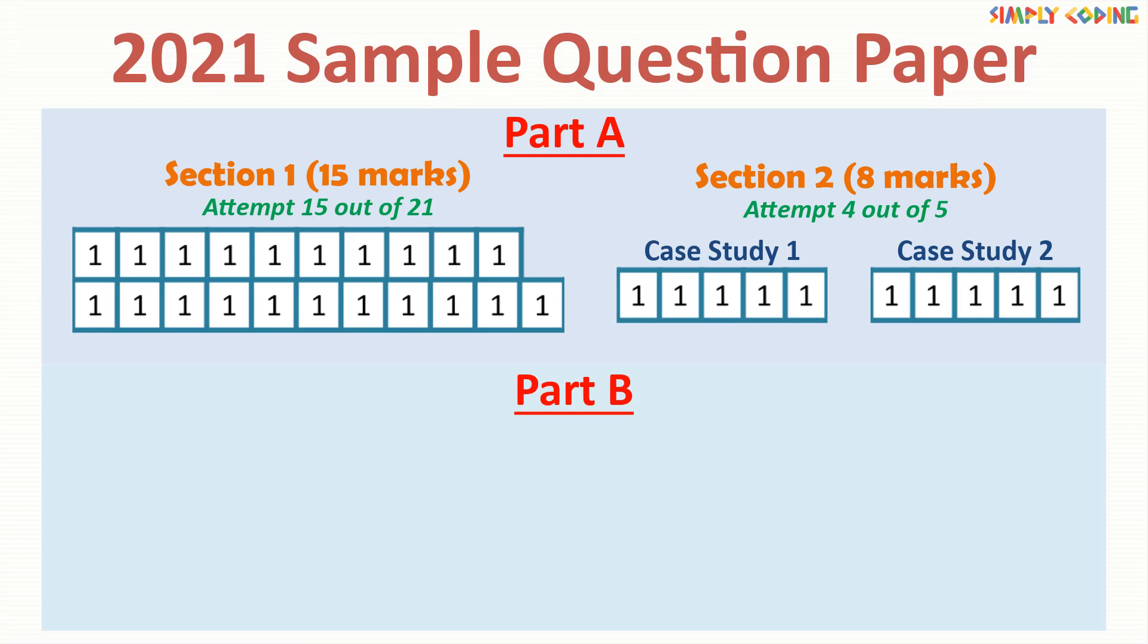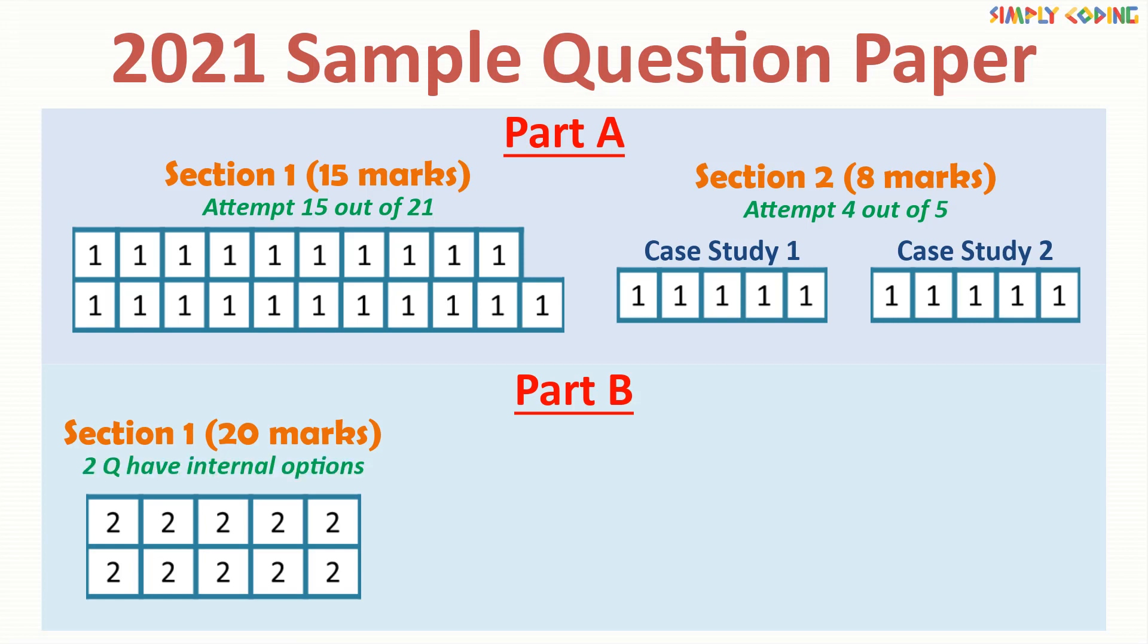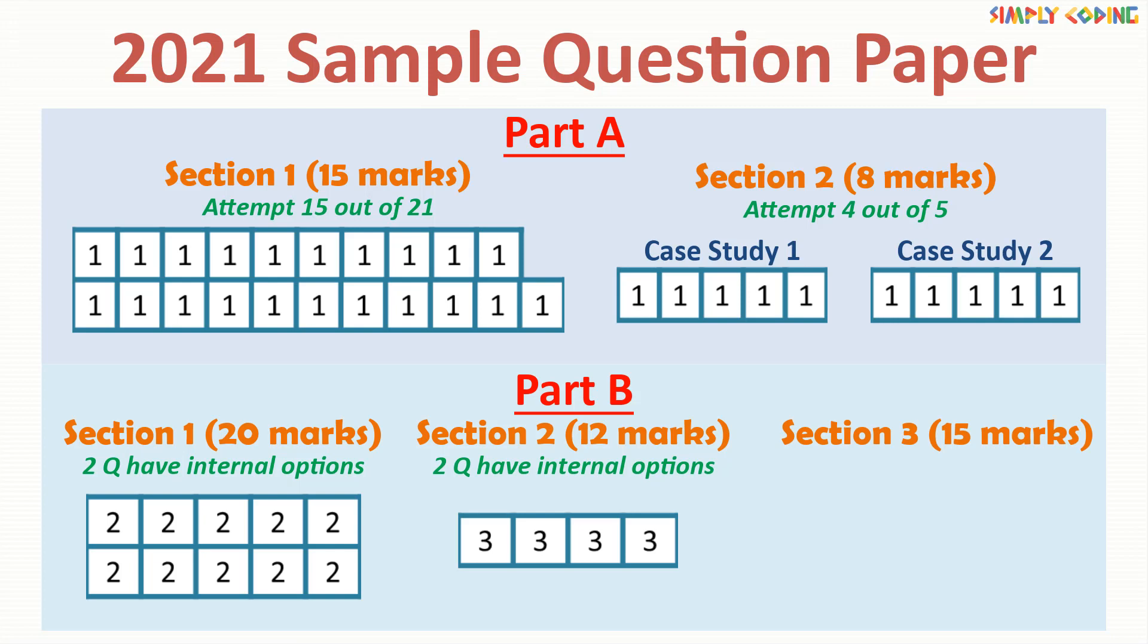Part B has descriptive answer questions and it has 3 sections. Section 1 is of 20 marks and has 10 short answer questions of 2 marks each in which 2 questions have internal options. Section 2 is of 12 marks and has 4 long answer questions of 3 marks each in which 2 questions have internal options. Section 3 is of 15 marks and has 3 very long answer questions of 5 marks each in which 1 question has internal option. So, this is how your question paper will look like.